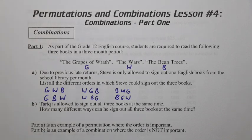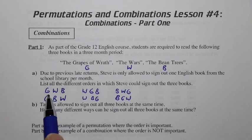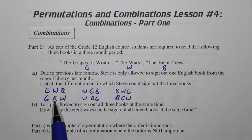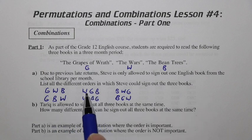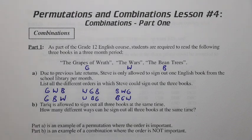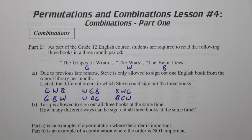Now what about Tariq? Tariq is allowed to sign out all three books at the same time. How many different ways can he sign out all three books at the same time? Well, he could come in one day and get Grapes of Wrath, Wars, and Bean Trees. Another day he can walk in and get Grapes of Wrath, Bean Trees, and Wars — or Wars and so on. But how many different ways can he do that if he gets them all at the same time and it doesn't matter which order he gets them in, as long as he's in possession of all three?